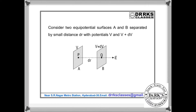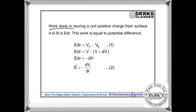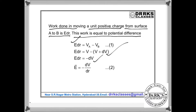Consider two equipotential surfaces A and B separated by distance dr, with potentials V and V plus dV. The difference in potential is dV. We know that work done in moving a unit positive charge from surface A to B is E·dr, where E is electric field. Electric field is force experienced per unit charge, and force into displacement is work. So this work is equal to potential difference by definition. So E·dr equals Va minus Vb, and substituting Va and Vb values, we get electric field E equals minus dV by dr — that is, the negative gradient of potential.